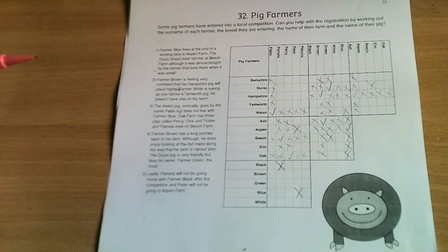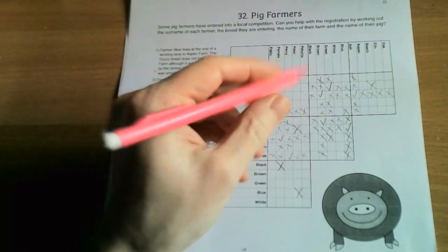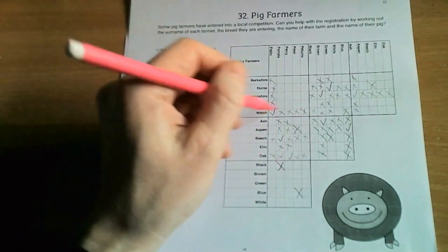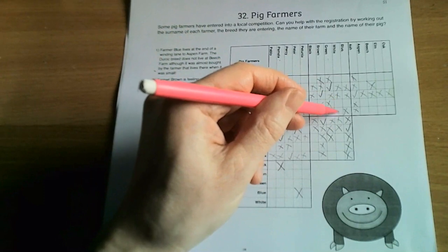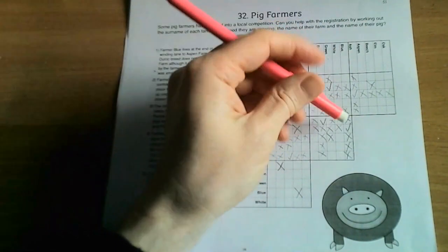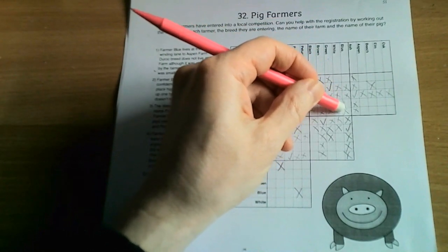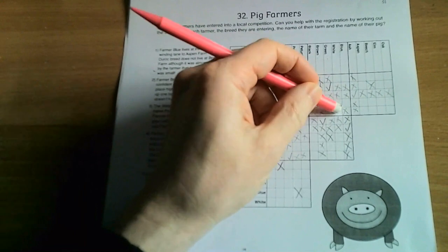And therefore you can do so. For instance, if we knew that Welsh was not Black, this is just for sake of argument, then there would be only one option left for the Welsh pig. It would have to be Farmer White, and therefore we could place a tick there. So that's another potential way to make progress when you only have one option left within a particular box for any of the entries.